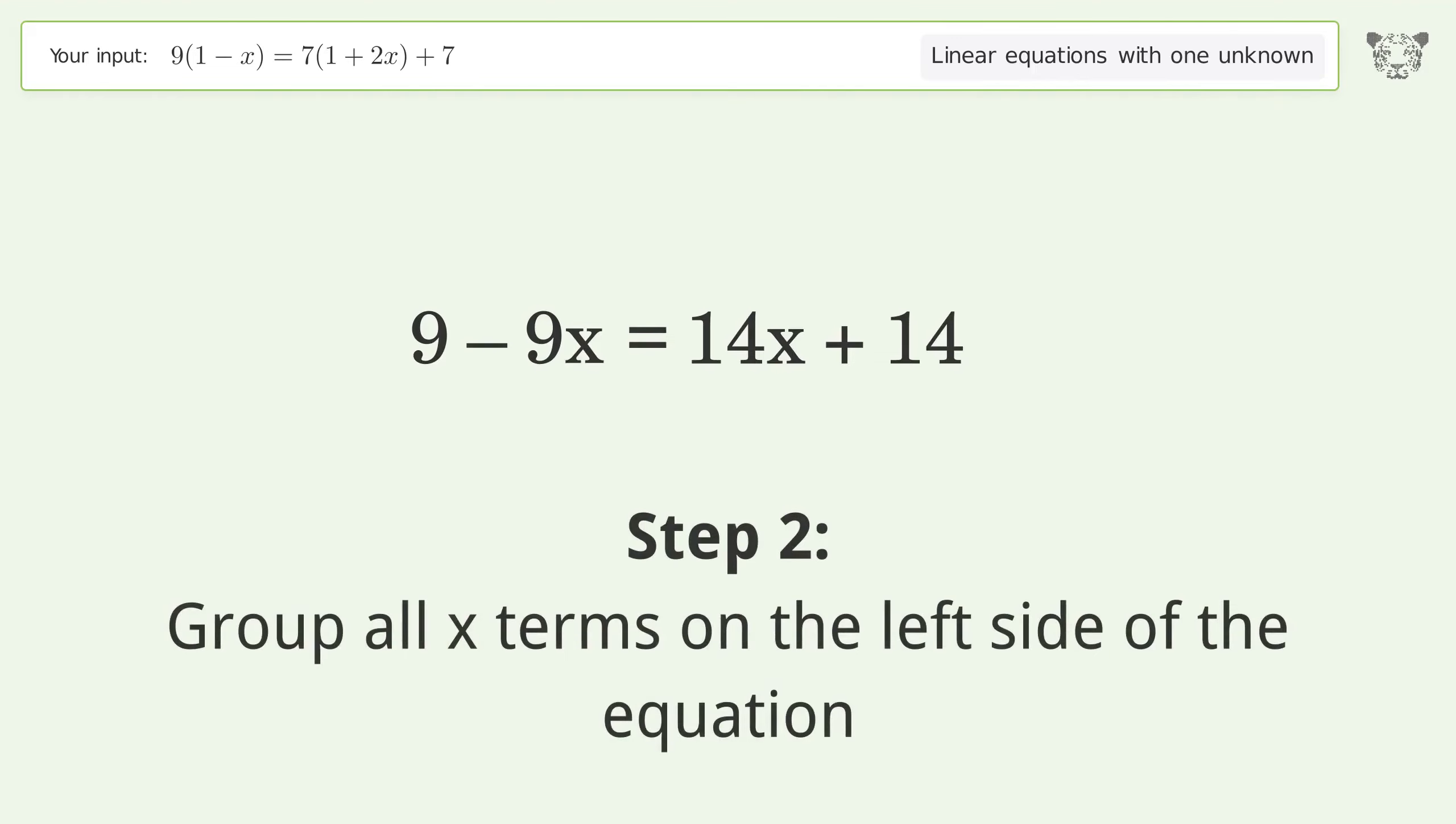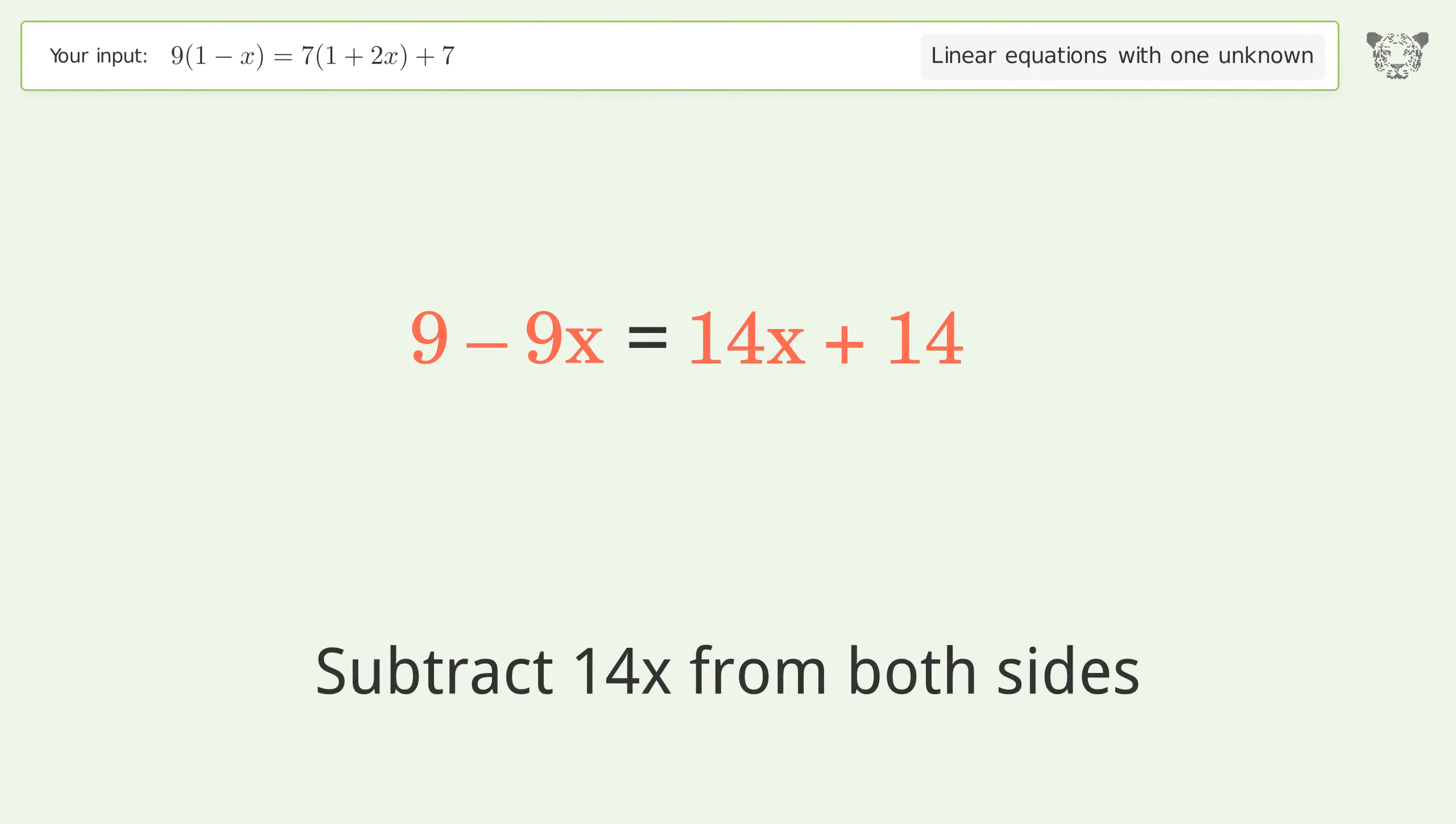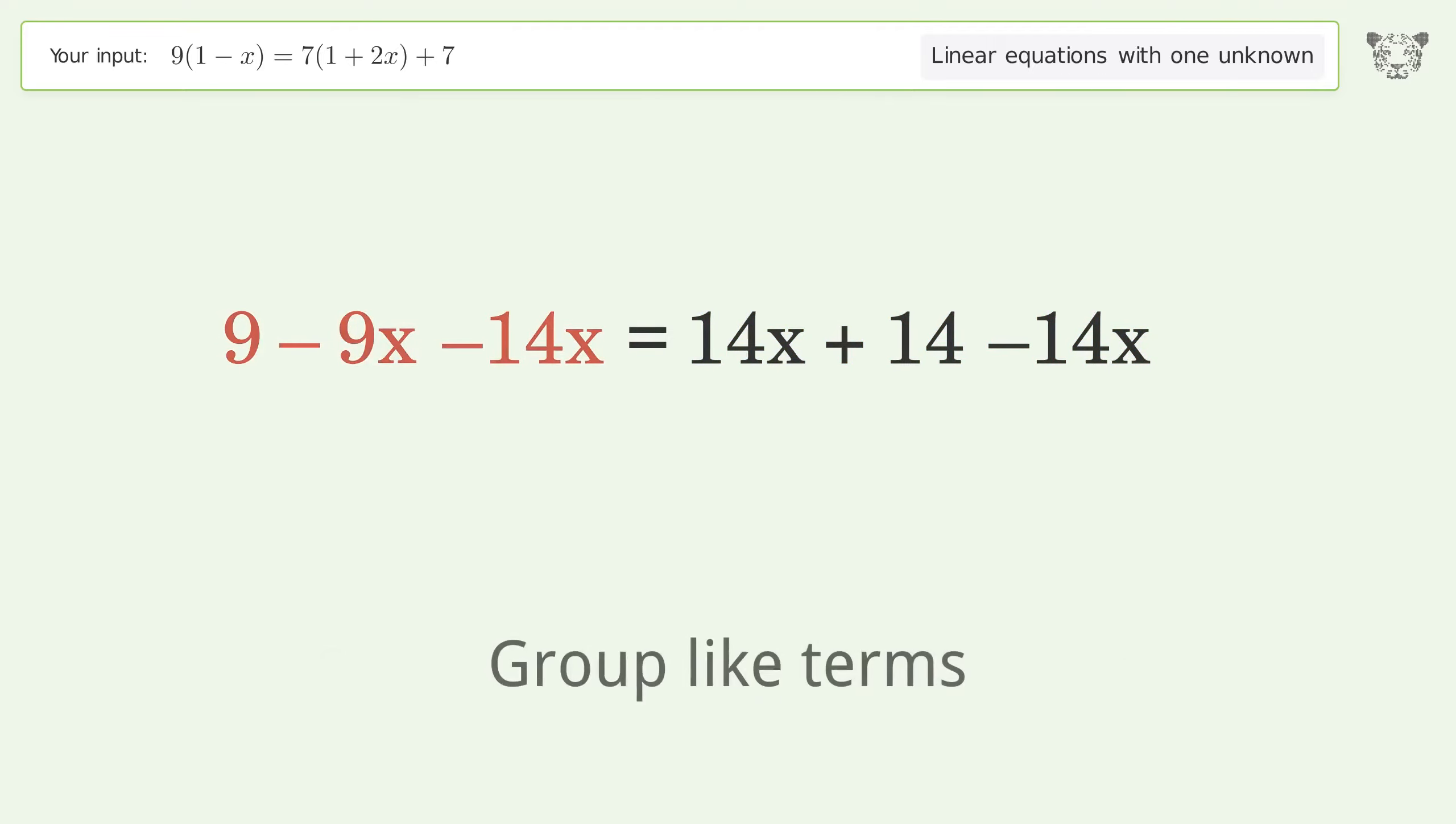Group all x terms on the left side of the equation. Subtract 14x from both sides. Group like terms.